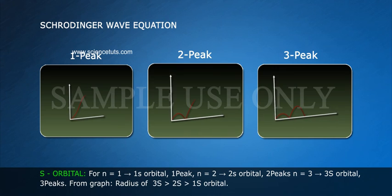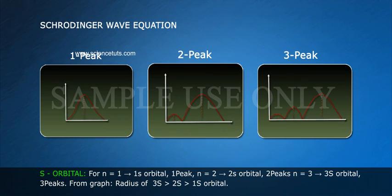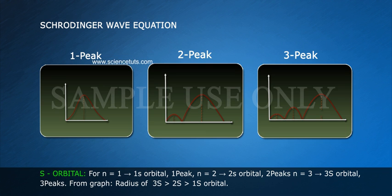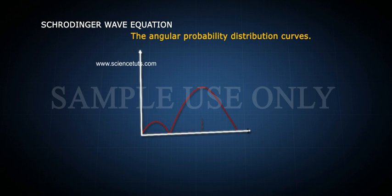For S orbital: n = 1 gives 1S orbital with 1 peak; n = 2 gives 2S orbital with 2 peaks; n = 3 gives 3S orbital with 3 peaks. From the graph, radius of 3S > 2S > 1S orbital.